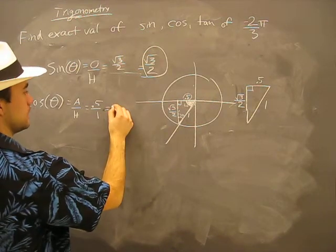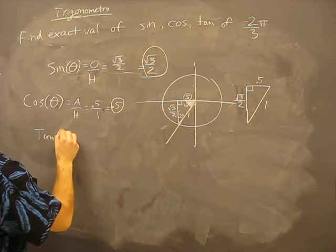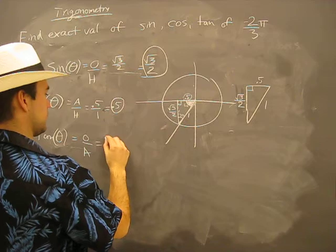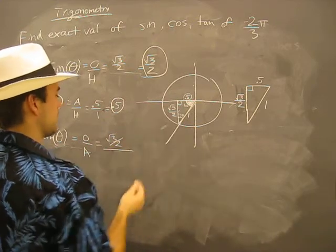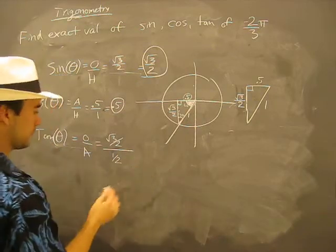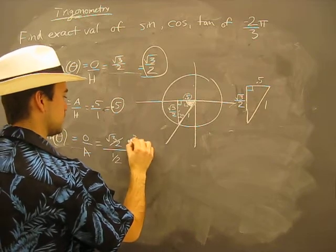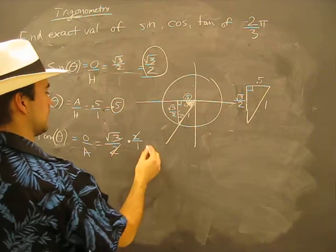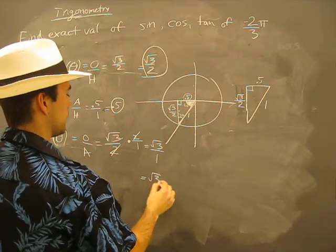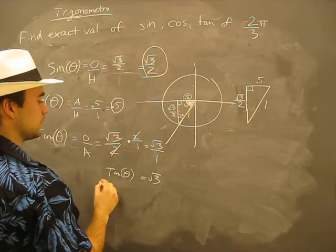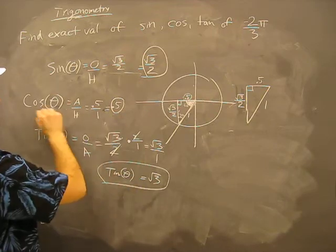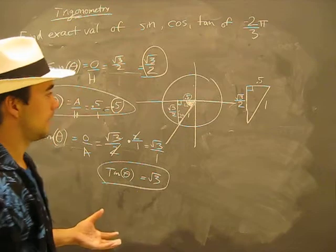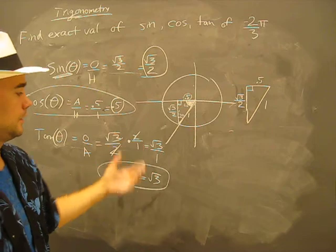Tangent of theta equals opposite over adjacent, which is root three over two divided by one-half. Dividing by a fraction is the same as multiplying by its reciprocal. The twos cancel and we're left with root three over one, which is root three. So tan theta equals root three. All I needed to do to get that was a little bit of SOH-CAH-TOA and the Pythagorean theorem — and there we go.